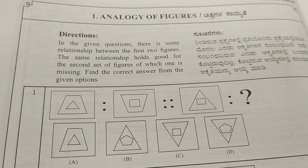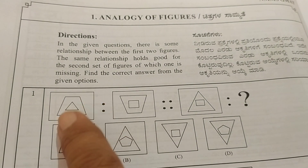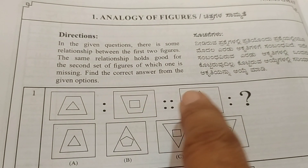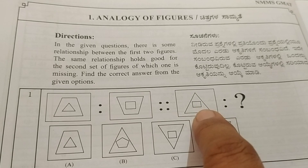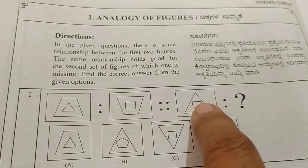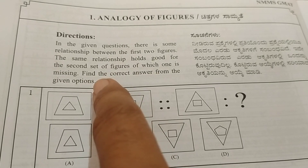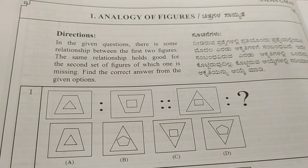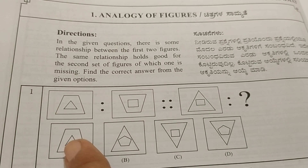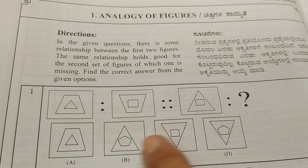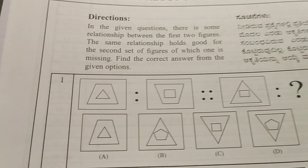The same relationship holds good for the second set. This is the first set here, so the same relationship should hold for the second set. In the second set they have given one figure and the second figure we have to find out. Find the correct answer from the given options — they have given 4 options and we have to find out which is right.